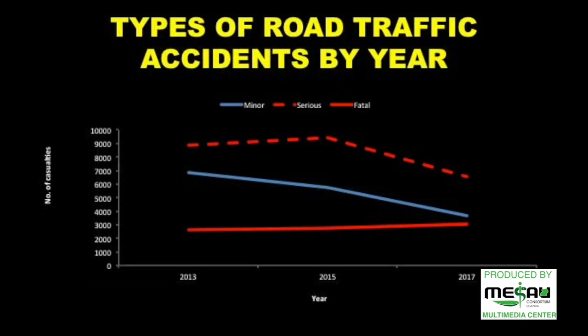This slide shows the number of casualties by type of accidents over time between 2013 and 2017. It presents minor accidents, serious accidents, and fatal accidents, represented by the red line. Over time, there has been a reduction in the number of minor and serious accident casualties between 2013 and 2017. However, the number of fatal accidents has gone up, from about 2,600 to about 3,600 casualties per year.